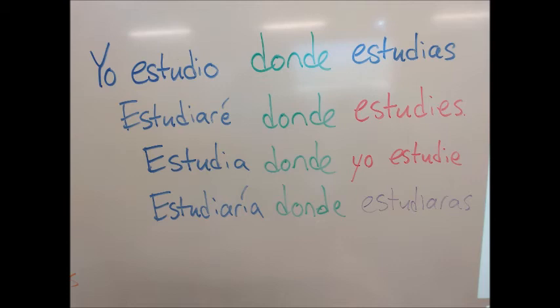Then the third one, we have a command: 'Study where I study.' And you don't know where I'm studying yet, and so that one is also in the subjunctive. And then finally, we have 'I would study where you study.' But we don't know where you study yet, and so it stays in the imperfect subjunctive.